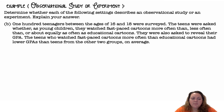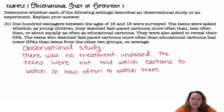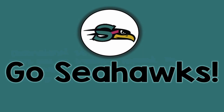Part B: 100 teenagers between the ages of 16 and 18 were surveyed. The teens were asked whether, as young children, they watched fast-paced cartoons more often than, less often than, or about equally as often as educational cartoons. They were also asked to reveal their GPA. The teens who watched fast-paced cartoons more often than educational cartoons had lower GPAs than teens from the other two groups on average. This is an observational study — there was no treatment imposed. The teens were not told which cartoons to watch or how often to watch them; we just asked them about what had happened. Go Seahawks!